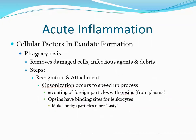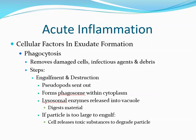Next is recognition and attachment. A process known as opsonization occurs to help speed up what is normally a very slow process. Opsonization means coating any foreign particle with materials from the plasma called opsins. Opsins have binding sites for leukocytes, essentially making the foreign particles appear more attractive and easier for leukocytes to grab since they have receptors for them. Next is engulfment and destruction — the phagocytic cell sends out pseudopods to engulf the foreign particle, forming a phagocytic vacuole called a phagosome. A lysosome fuses with the phagosome to form a phagolysosome, releasing lysosomal enzymes into the vacuole. The cell is said to become degranulated as more lysosomes fuse.